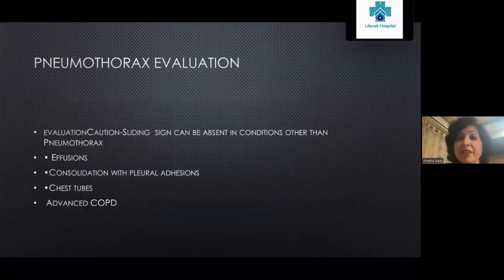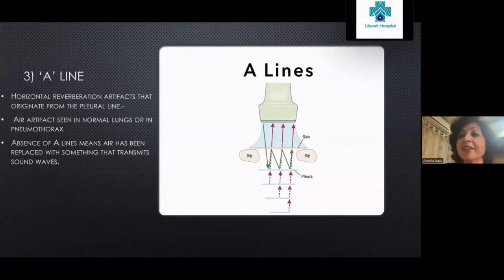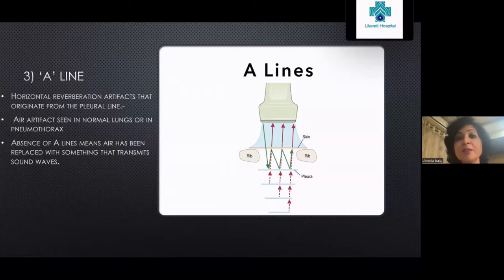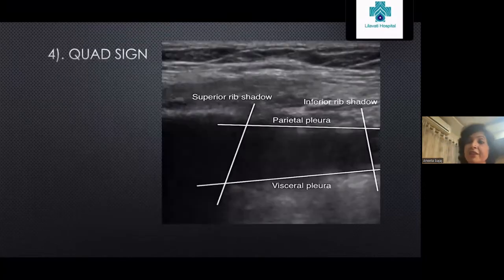There are other conditions where sliding sign can be absent: effusions, consolidation with pleural addition, chest tubes, or advanced COPD. You must interpret in a clinical context. The third sign is the A-lines — horizontal reverberation artifacts originating from the pleural line, parallel and equidistant to each other. A-lines are seen in normal lungs and also in pneumothorax. Absence of A-lines means air has been replaced by something that transmits sound waves — either consolidation or effusion.